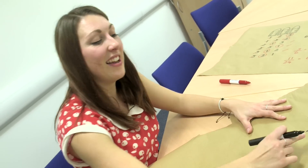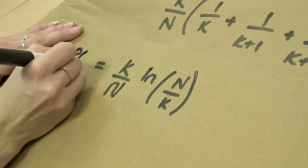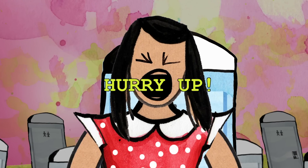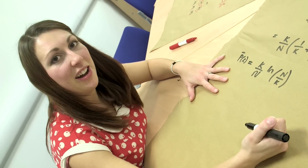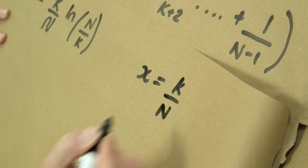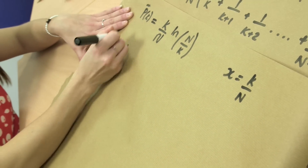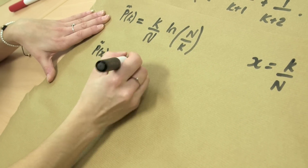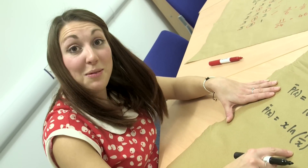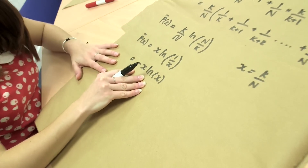We're getting there. Let's replace the long bracket with the approximation ln of n over k. This is still my probability function, just an approximation. To find my value of k I simplify by substituting x equals k over n, so the probability function is now in terms of x. k over n becomes x and I now have the log of 1 over x, which using log laws can be rewritten as minus x ln of x.